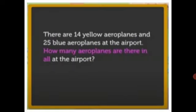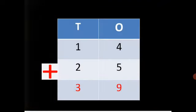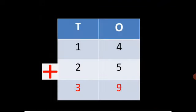First, we read the story. What information does it give? 14 yellow aeroplanes and 25 blue aeroplanes. Now, we have to find out how many aeroplanes are there in all. We have to add 14 and 25.